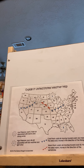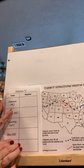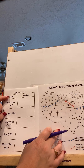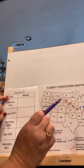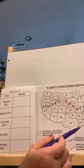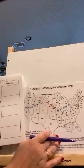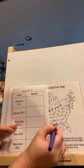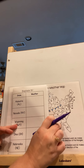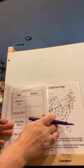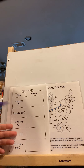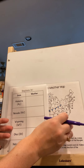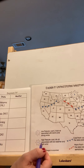Now let's actually work on our assignment together. I'm going to do the first one with you, which is Alabama. I have to find Alabama on the map — it's right here. I need to look at Alabama specifically, and I notice that there is a high pressure system very close to it. So I need to remember what high pressure means, and if I forgot, I use my reference guide.